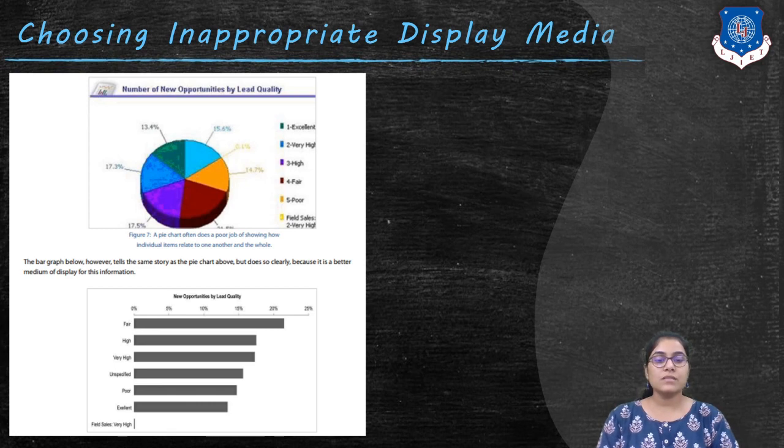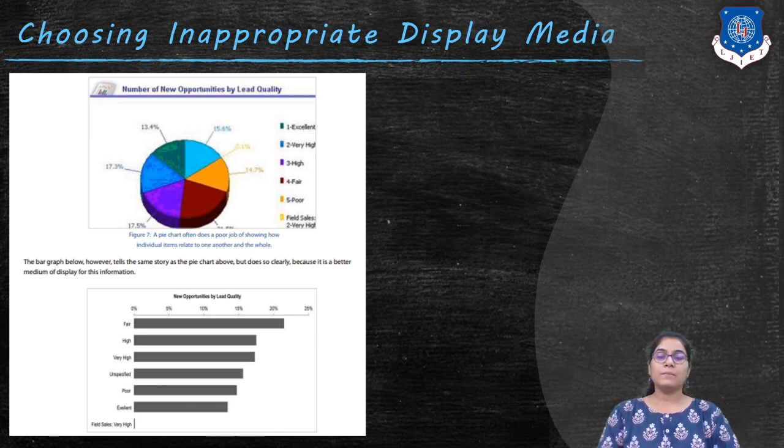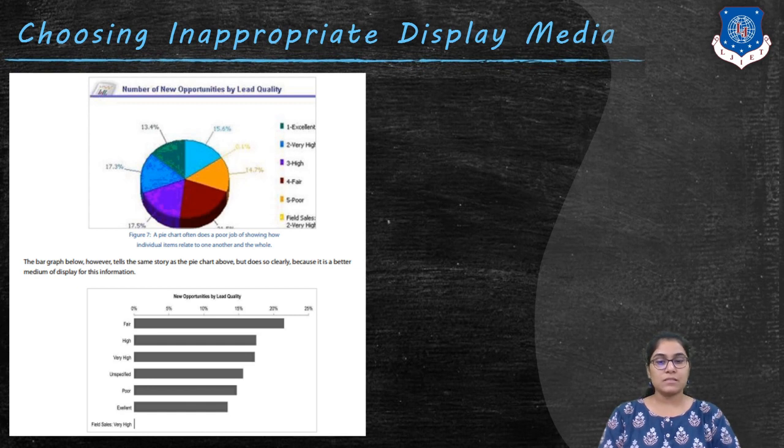The slices of this pie cannot be interpreted in a useful way without reading the associated numbers. So what's the use of this picture? The bar chart given below the pie chart, however, tells the same story as the pie chart but does so clearly because it is a better medium for displaying the information.